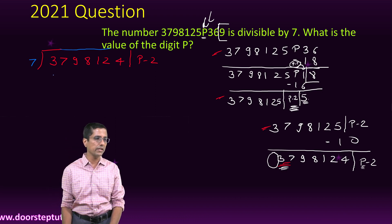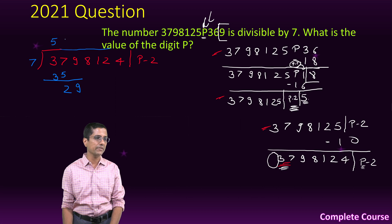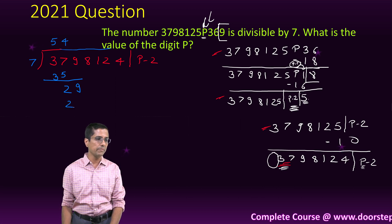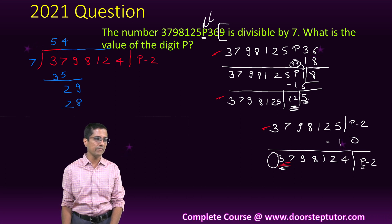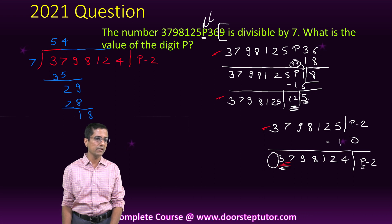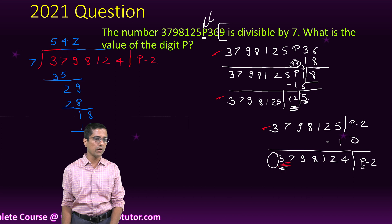I am dividing by 7. First we do 35, 7 times 5 is 35, so 35 would come here. Then I get 29 here. 7 times 4 is 28, so this will be 28 and then I get 18. 7 times 2 is 14, so 14 will come here.